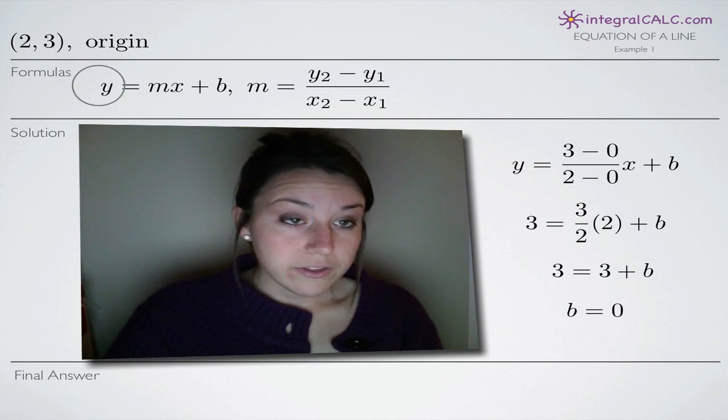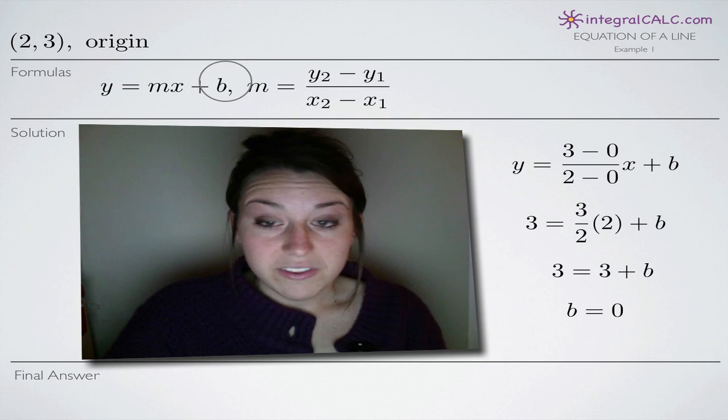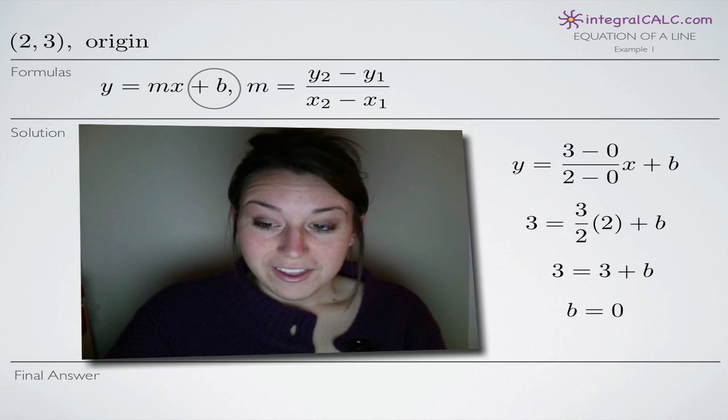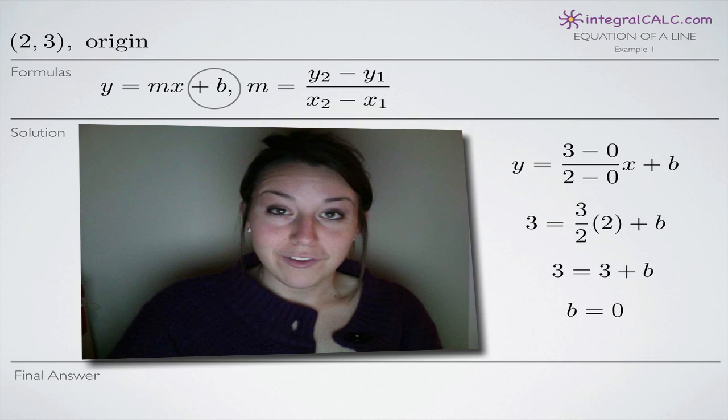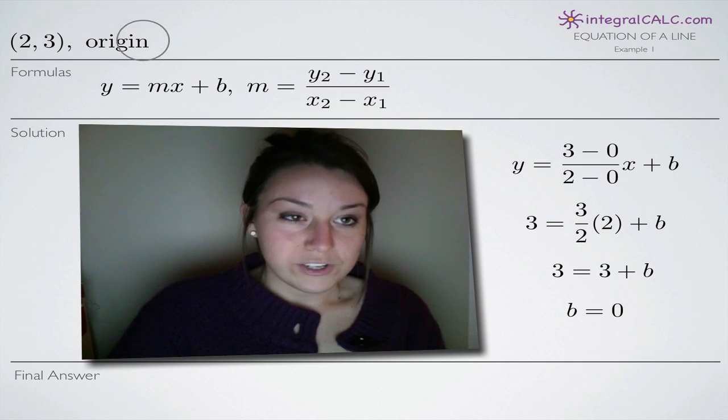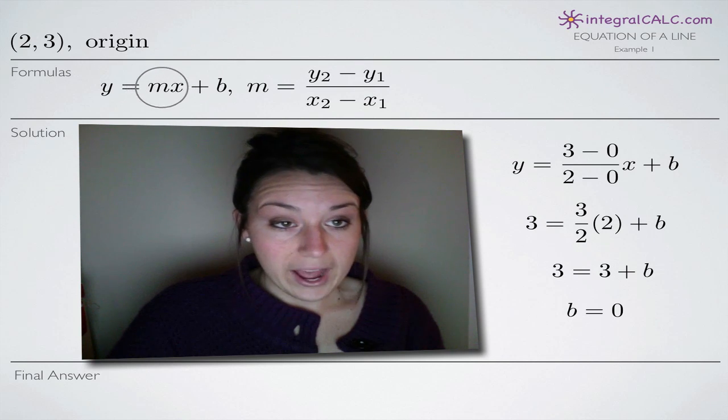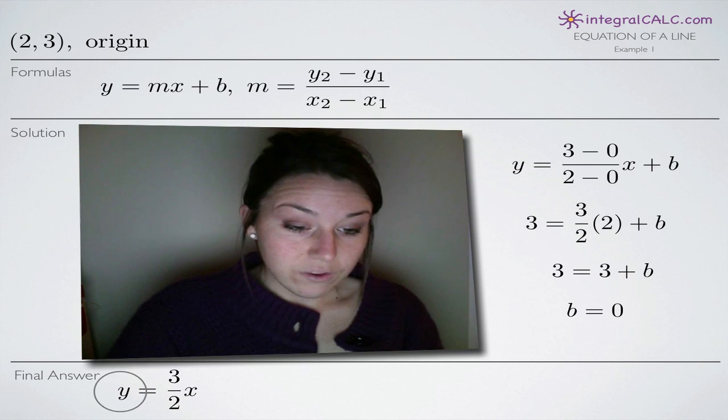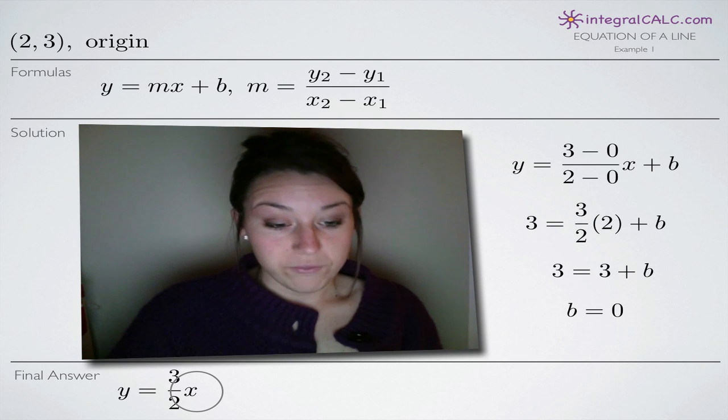Now looking back at the equation y equals mx plus b, we just found that b equals 0, which makes sense because b is the y-intercept. If our line intersects the y-axis at 0, that means it passes through the origin, which was indicated in the original problem. So b equals 0 and the slope is 3 halves. The equation of this line is y equals 3 halves x, and that's our final answer.